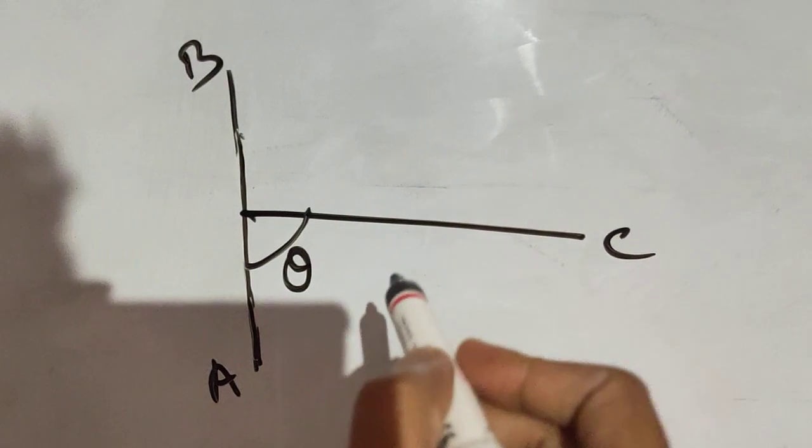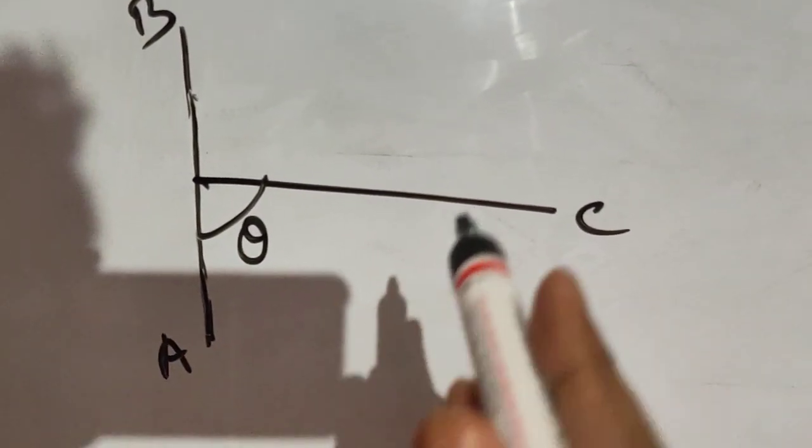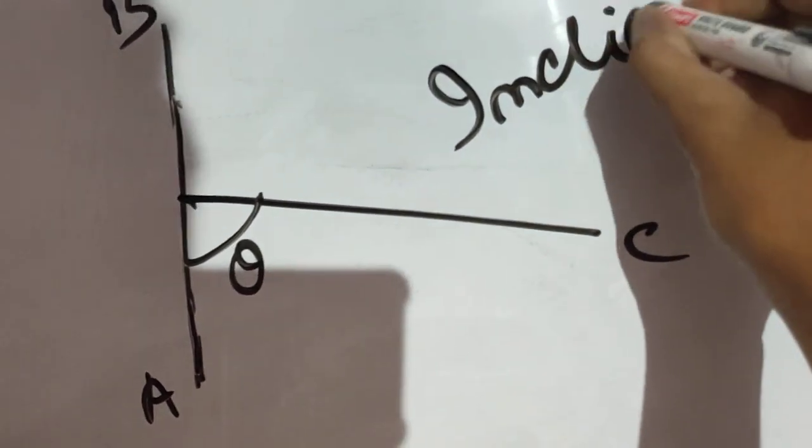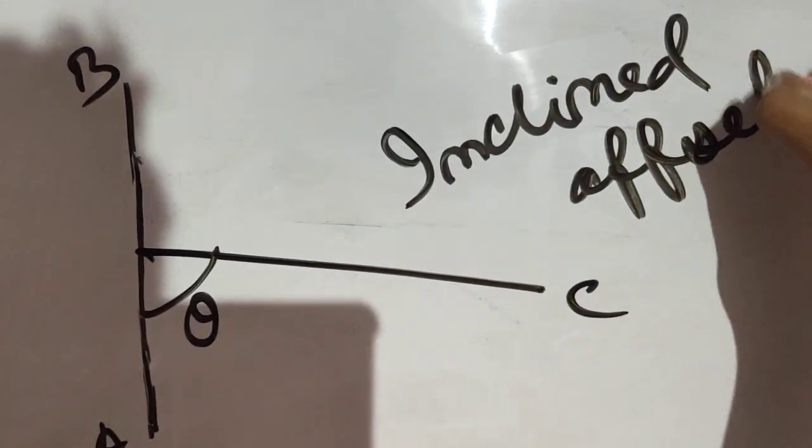And if this offset is not perpendicular, it is making any angle besides 90 degree, then this offset can be called inclined offset.